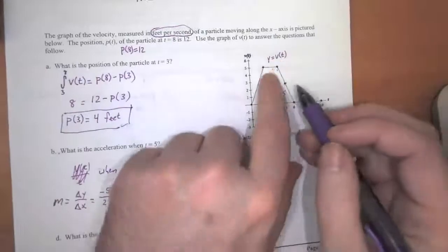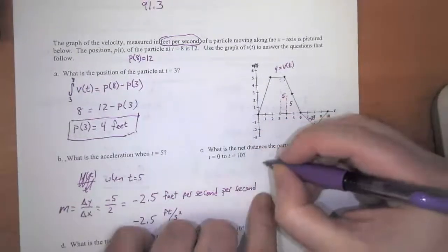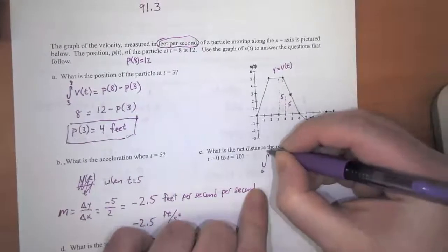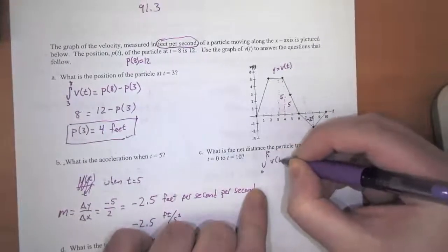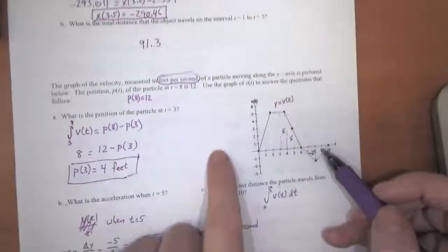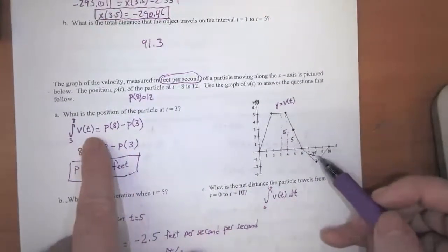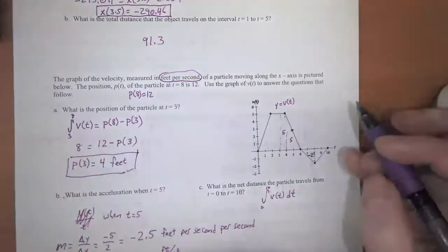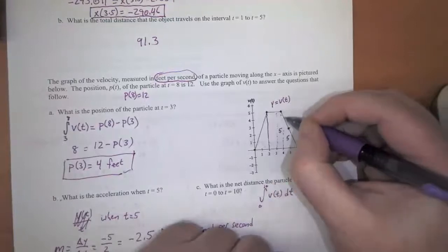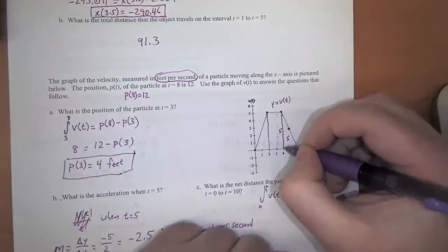So once again, as the problem says, this is just the definite integral from 0 to 10 of v of t dt. So let's do the same thing we did when we calculated the definite integral in Part A, except this time we'll calculate the area of the whole region.